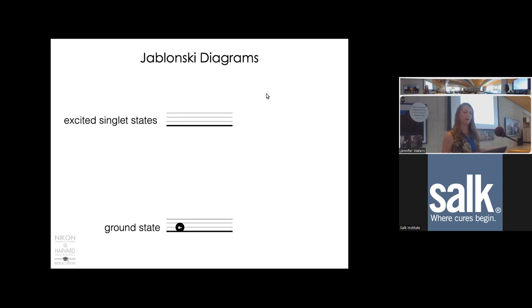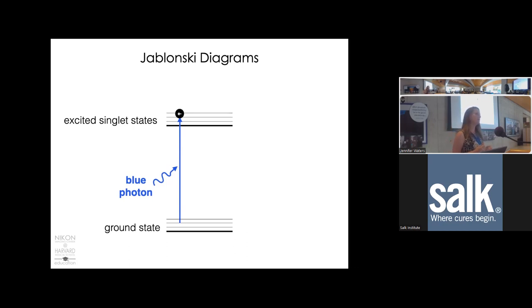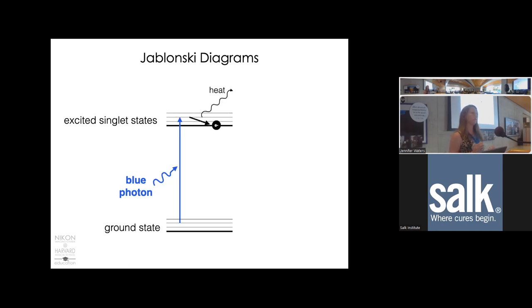These are called Jablonski diagrams. The lines indicate different energy states of our molecules. Our molecule starts in the ground state, absorbs a photon, and moves into an excited singlet state—an electron moves into a higher orbital. This is a very high-energy, tense, and unstable state. The molecule will quickly undergo vibrational relaxation, releasing some energy as heat. It's now in a lower-energy, more stable excited state, and it will sit there for some period of time called the lifetime of the fluorophore—usually on the order of nanoseconds.